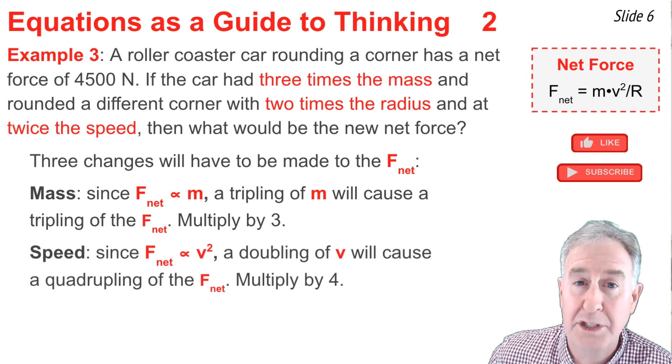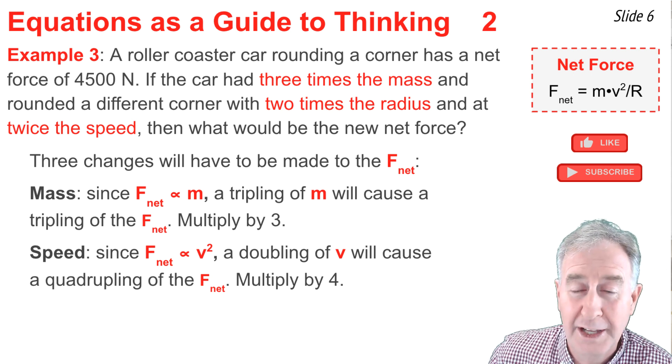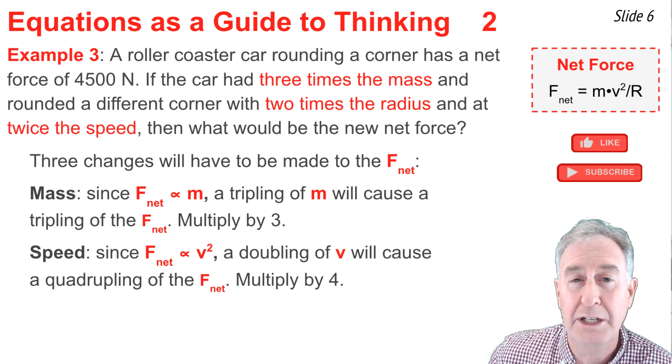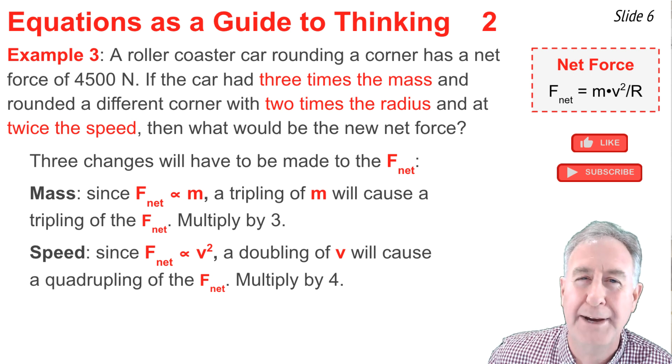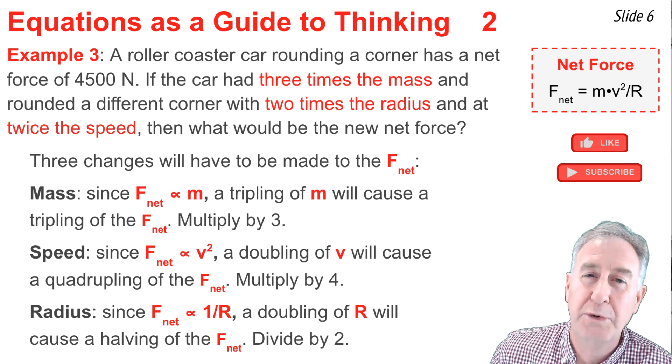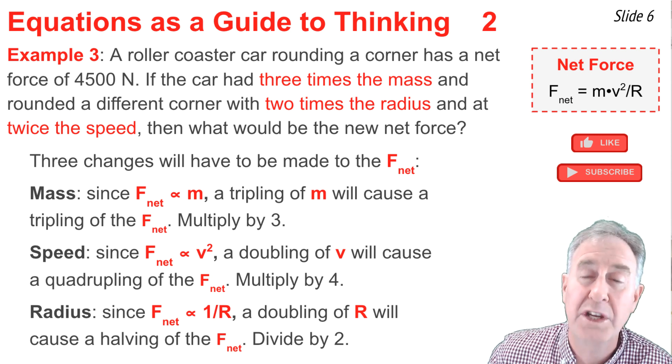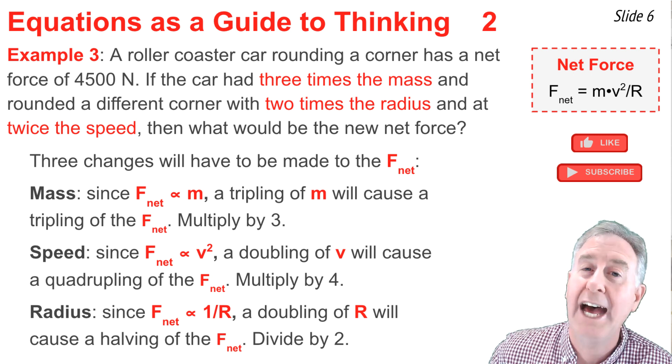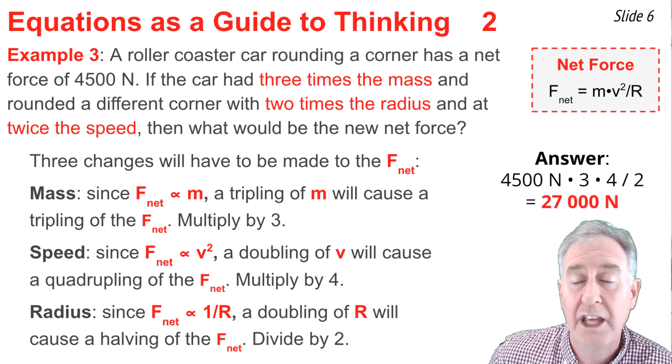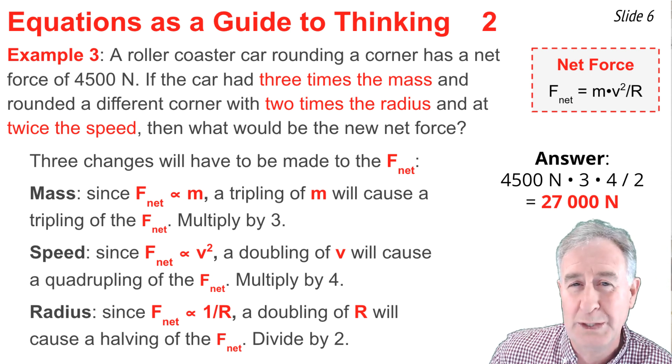The second change is the result of what happens to speed. I'm told that speed is doubled. And according to the formula, f net is proportional to speed squared. So whatever change is made in the speed, the square of that change must be made to the f net. If speed is doubled, then the f net must be quadrupled. I'll need to multiply by 4. The last change has to do with radius. In the formula, f net is inversely proportional to radius. So whatever change is made to the radius, the reciprocal change must be made to the f net. In other words, if r is doubled, the f net must be halved. I'll need to divide by 2. So if I take these three changes and apply them to the original f net value of 4,500, if I multiply by 3, if I multiply by 4, and I divide by 2, I'll get 27,000 newtons as the new net force.